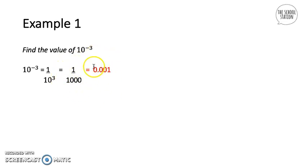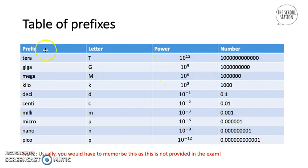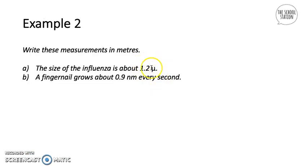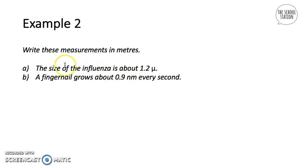Example two asks us to write these measurements in meters: the size of the influenza virus is about 1.2 micrometers, and a fingernail grows about 0.9 nanometers every second. You might be baffled, but I'll show you a trick. Using the table of prefixes, that symbol is micro, so it's 1.2 micrometers, and the other measurement is in nanometers.